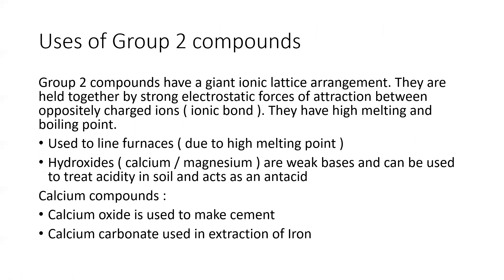Uses of Group 2 compounds: Group 2 compounds have a giant ionic lattice arrangement, held together by strong electrostatic forces of attraction between oppositely charged ions. They have high melting and boiling points, which is why they are used to line furnaces — the lining protects the furnace from high temperatures. Hydroxides like calcium and magnesium hydroxide are weak bases because they don't fully dissociate, so they can be used to treat acidity in soil and also act as antacids.